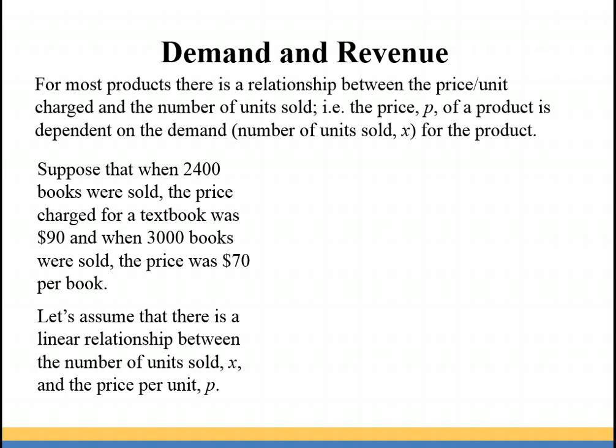Let's assume that there is a linear relationship between the number of units sold, x, and the price per unit, p. Since there is a linear relationship between our variables, we can plot the two points that we have in our situation and draw a straight line through those points.